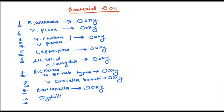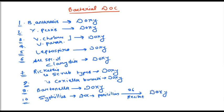The next bacteria is syphilis. The drug of choice for syphilis is penicillin, but if the strain is resistant to penicillin, then we prescribe doxycycline. So that is ten problems, one solution: doxycycline.